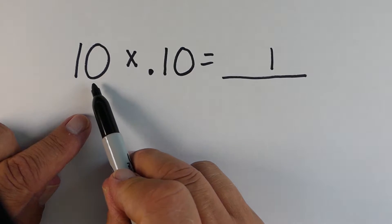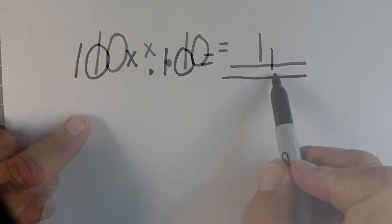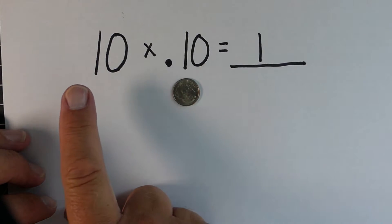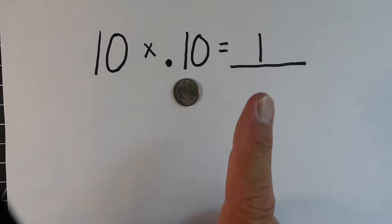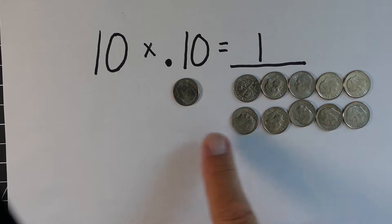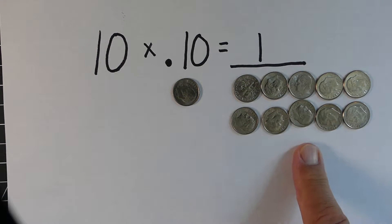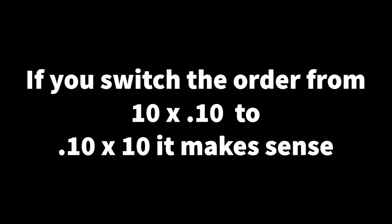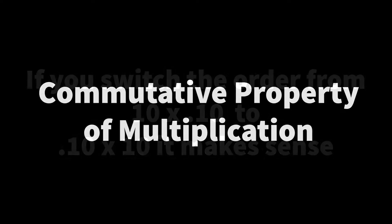So how can we imagine this? Well, for the 0.10 — or the 10 hundredths — we're going to think of it as a dime. So we would have 10 dimes. And if we have 10 dimes, 10 dimes would equal $1. It makes a lot more sense if you switch the order of the 10 and the 0.10, where it's 0.10 times 10 — so we're taking a small number and making it bigger.